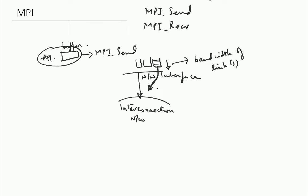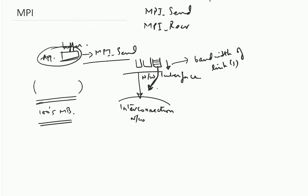Now, what may happen is that when you do an MPI send, maybe the size of the data you have is very, very large. It may be say hundreds of MB, which is quite common actually. If you are looking at very large simulations, the amount of data you transfer is very, very large. So, if you are transferring hundreds of MBs of data, you call an MPI send and your buffer is of size some 100 MBs. It is going to try to fill these queues and these queues also have limited space, so sometimes these queues get full.